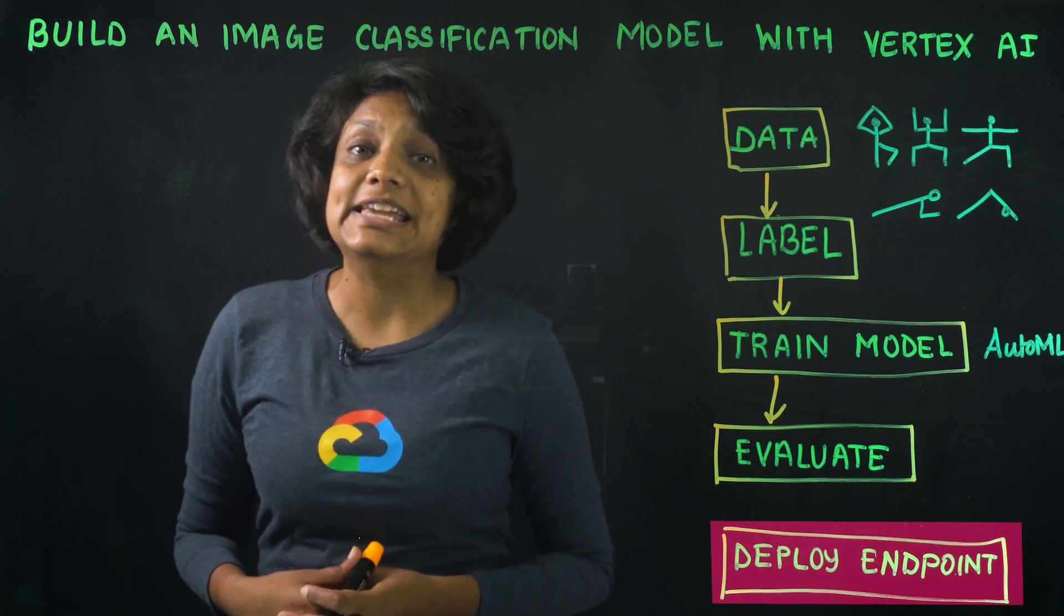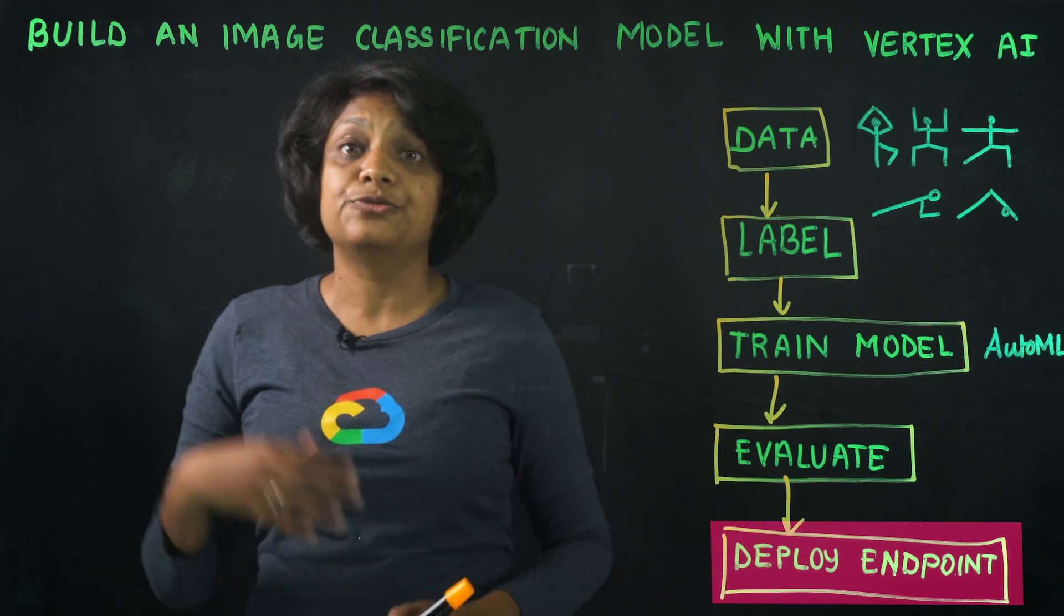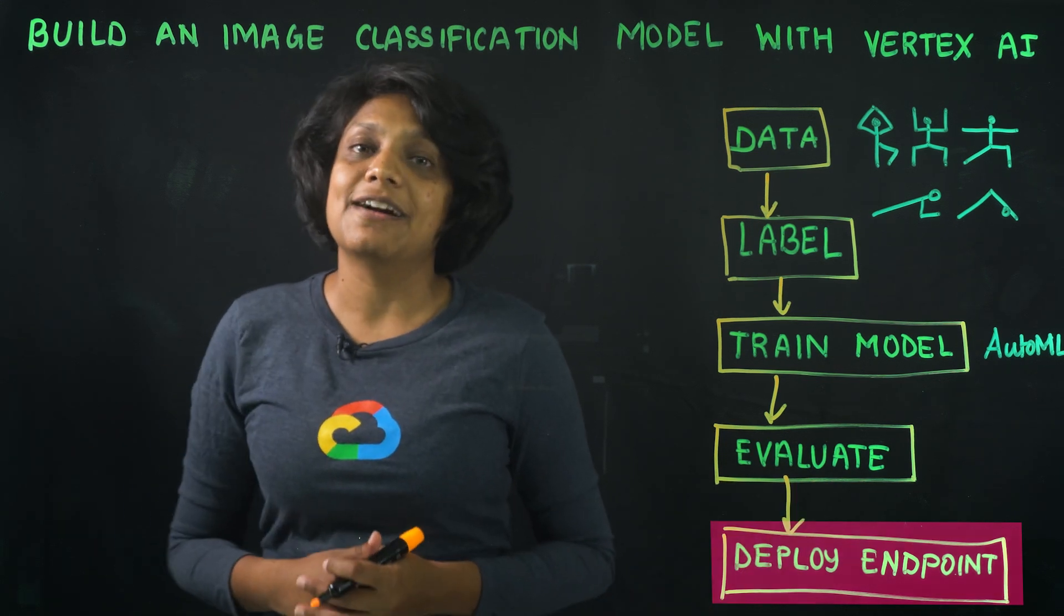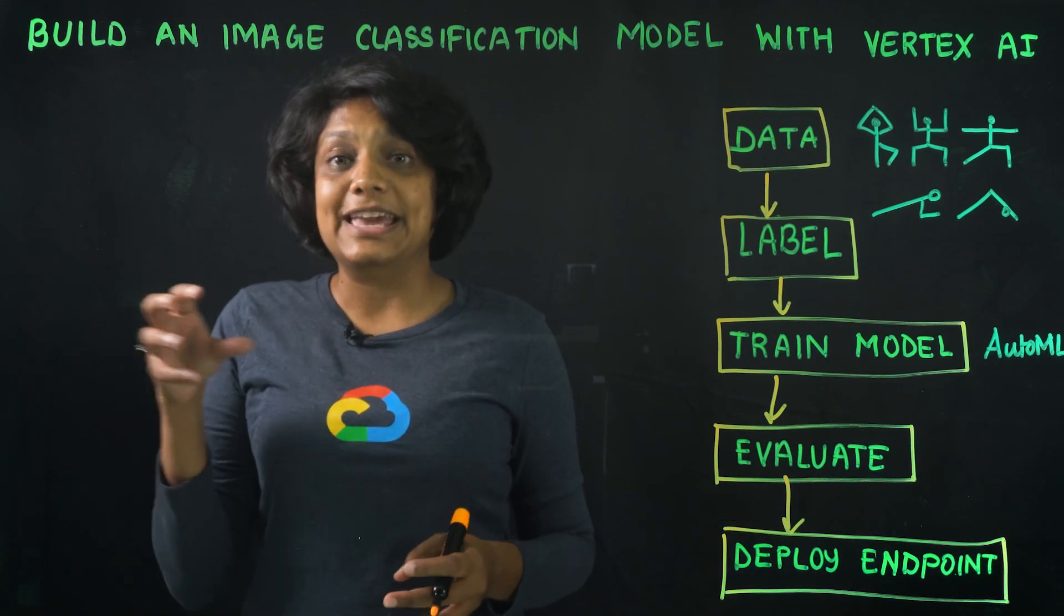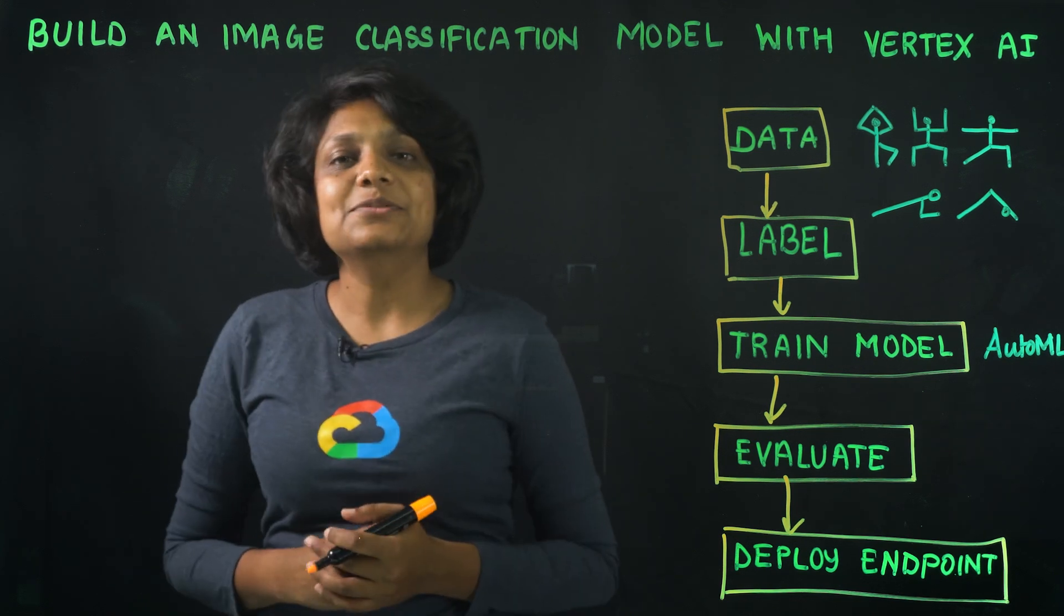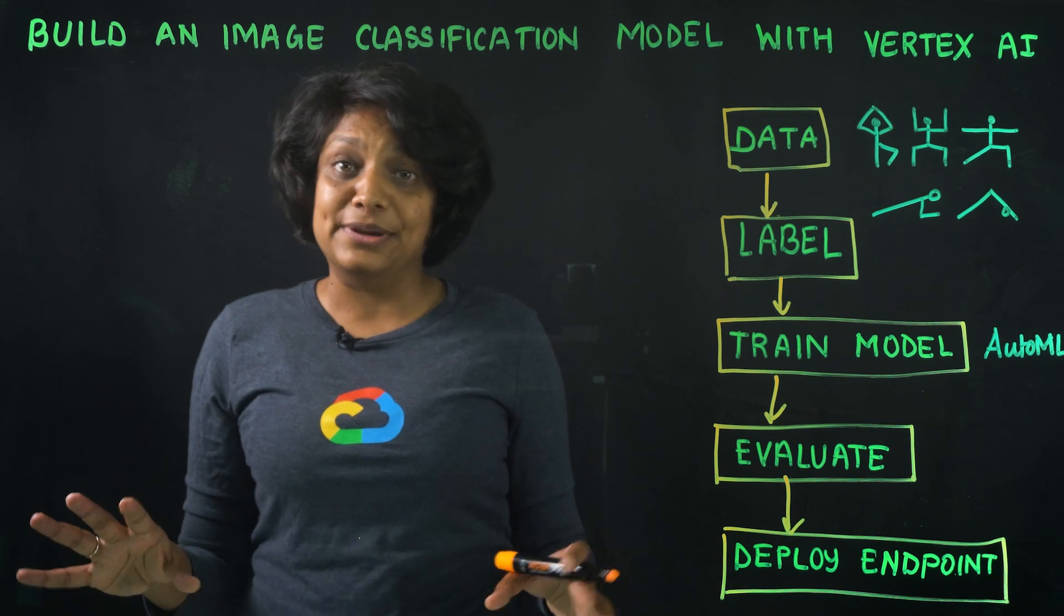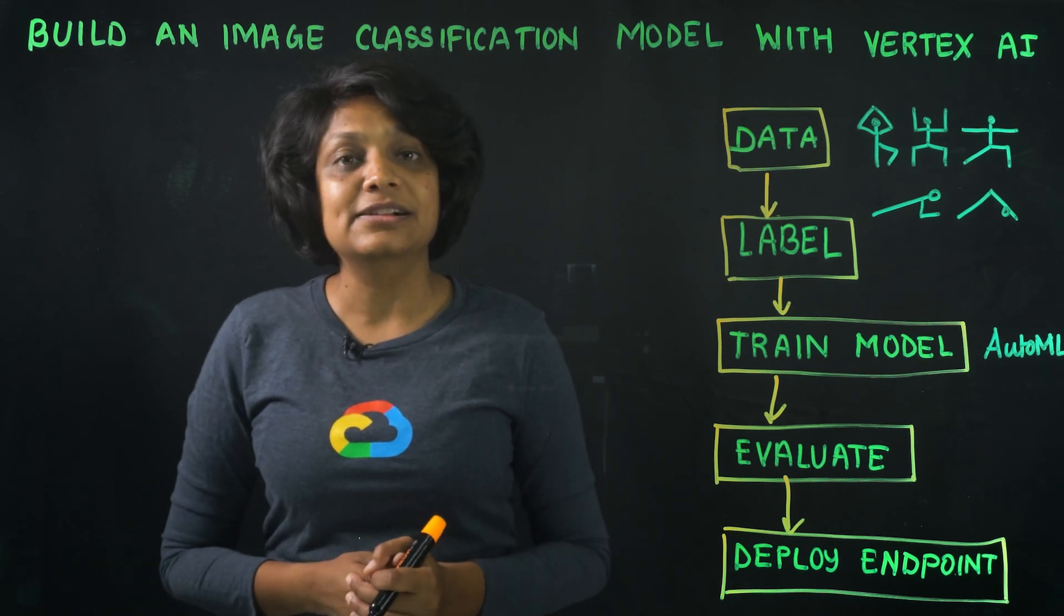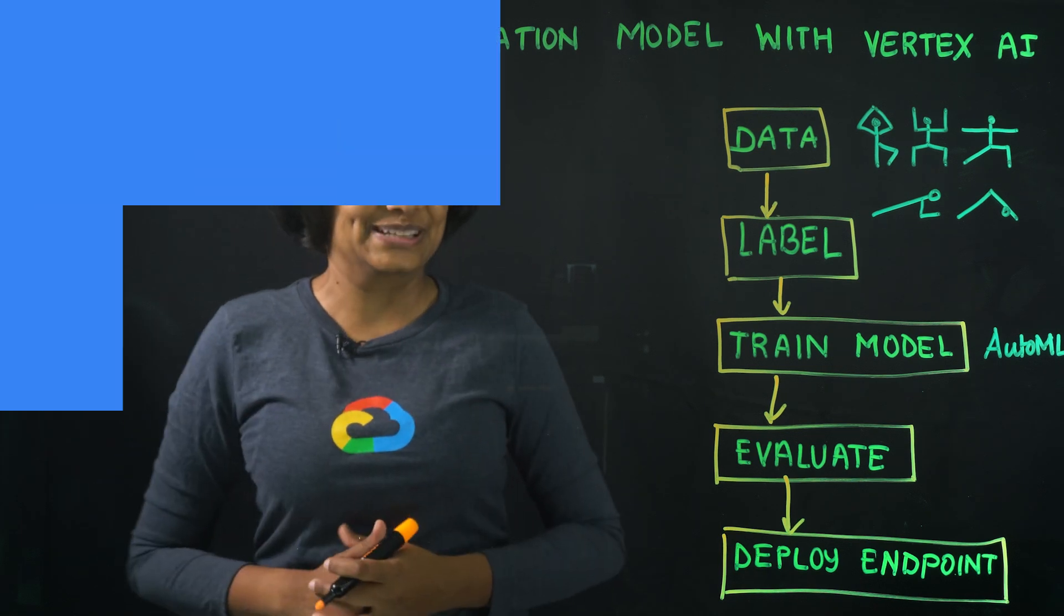Then we will need an endpoint to serve our models for predictions. After training our AutoML model, we will be able to deploy an endpoint with just one click. Now that we have laid out the data requirements and how we will train our model, we are ready to jump into the console and make it happen.